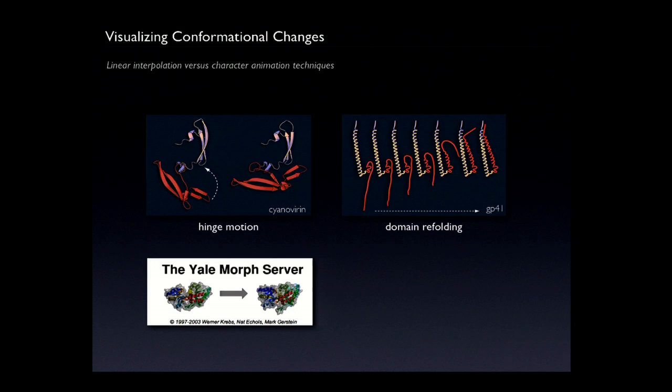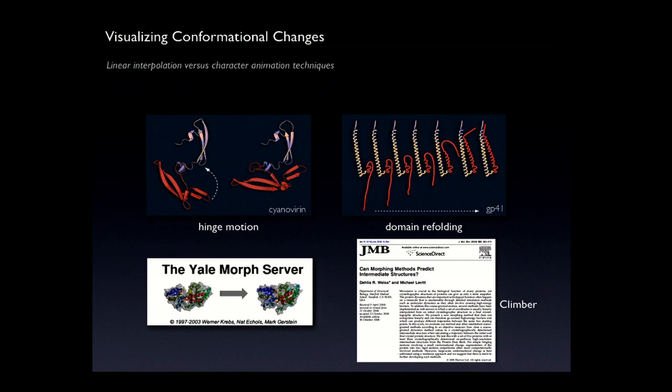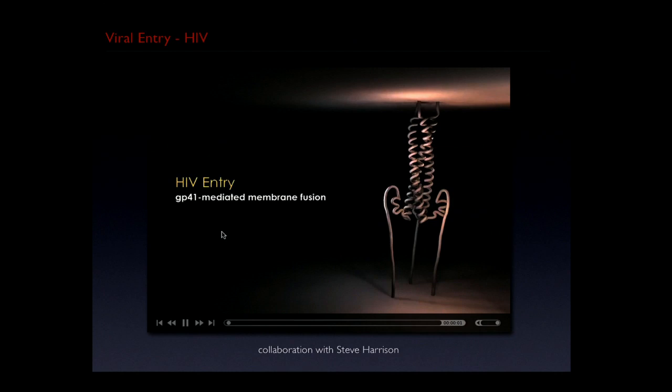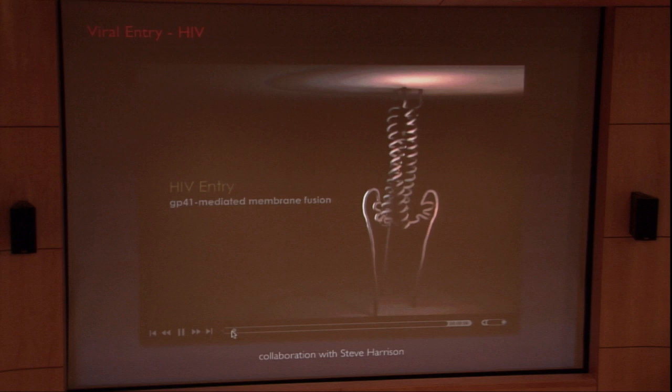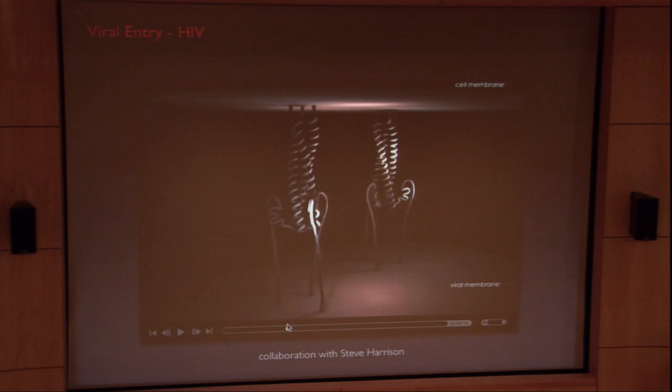The problem is there are other types of conformational changes that don't go through hinge-type motions — they go through refoldings and non-linear processes. There are attempts to do this algorithmically, such as Climber from the Symbios SympTK toolkit. But one way I've had to go about it is to use character animation tools that know nothing about proteins, but at least let you represent what you'd like to show.